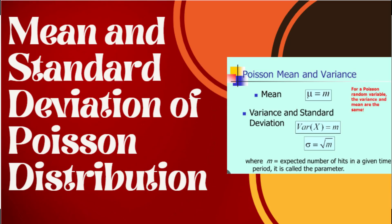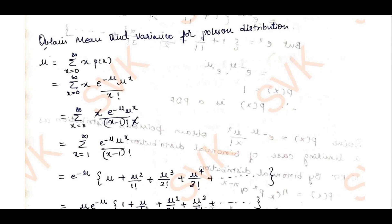Hello my dear students, I welcome you all to SVK Tutorials. Those who are not subscribed to my YouTube channel, do subscribe. In this video I will be solving how to derive the mean and variance for Poisson's distribution. The given question will be of the form: obtain mean and variance for Poisson's distribution.